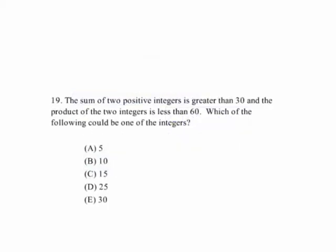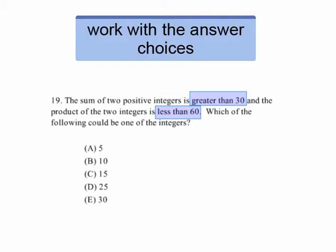This question says that the sum of two positive integers is greater than 30, and the product is less than 60. So which of the following could be one of the integers? In this case, it's easier to work with the answer choices, work from the answer choices. And what we want to do is target 30.